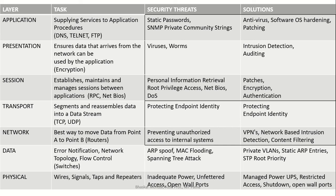In the transport layer, the main task is segmenting and reassembling data into a data stream. The two popular protocols here are TCP and UDP. Security threats involve protecting endpoint identity, and the solution is protecting the endpoint and updating identity.